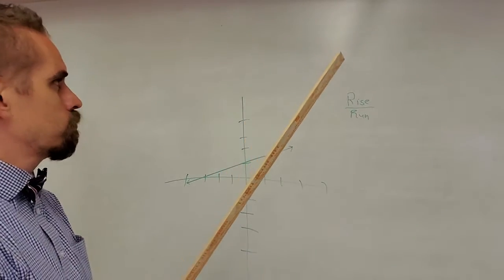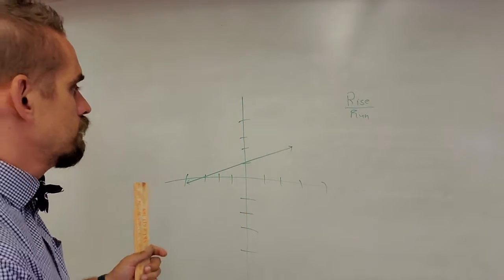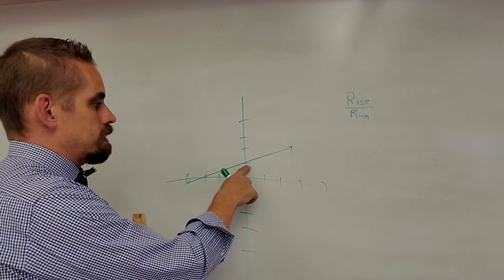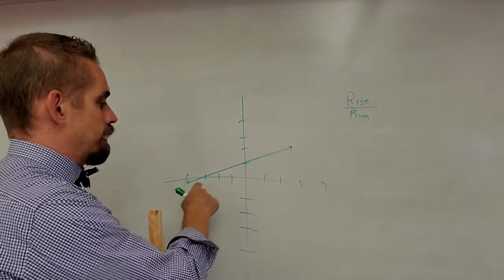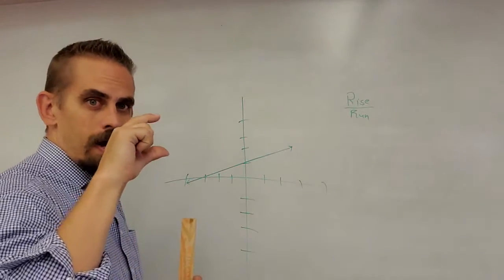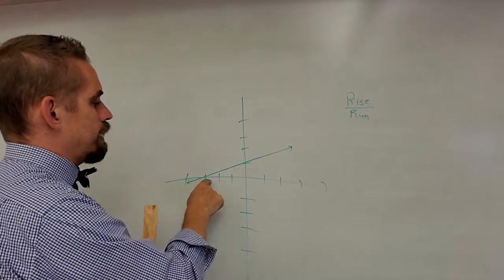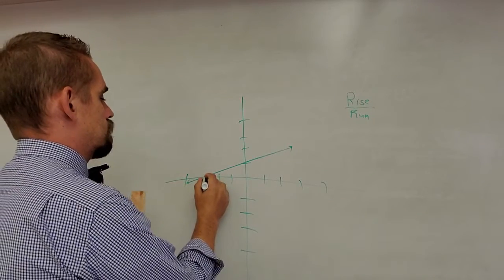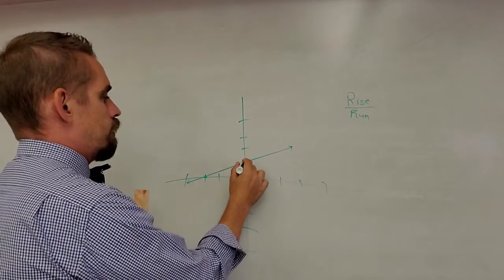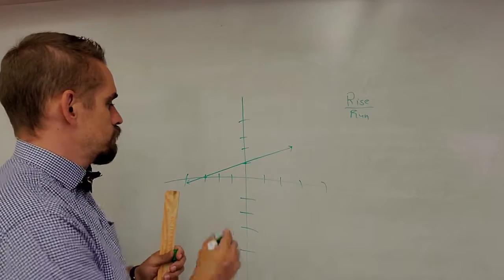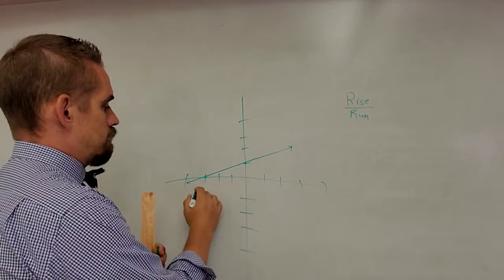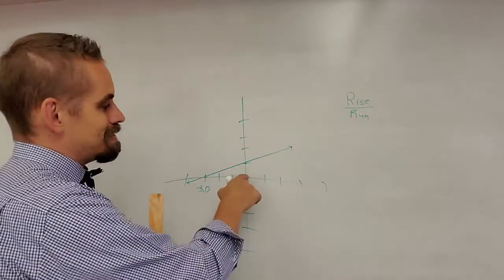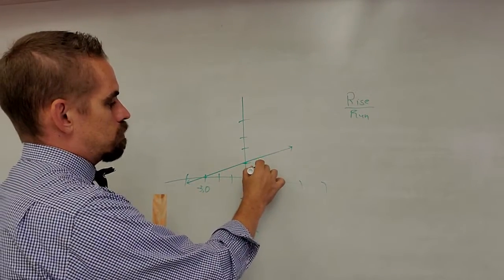Rise over run. Here we have where it connects with the y-axis and the x-axis. The rise - how high does it go between my x point right here and my y point right here? So this is negative three, zero, and this is zero, one.